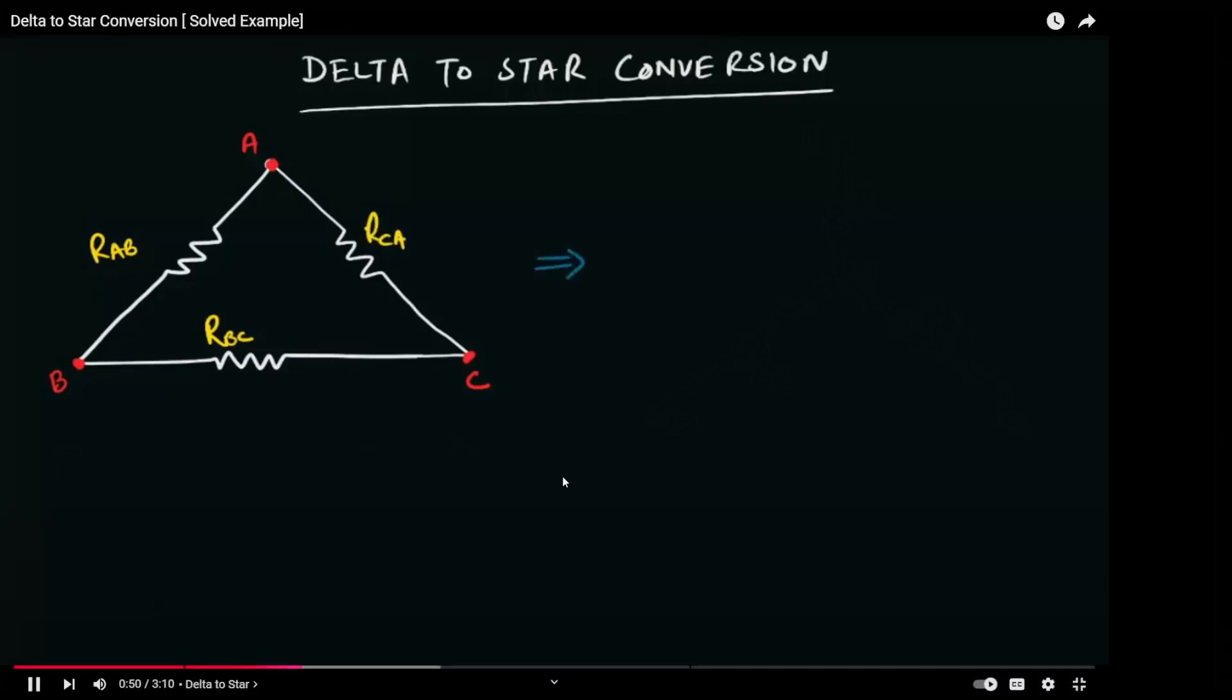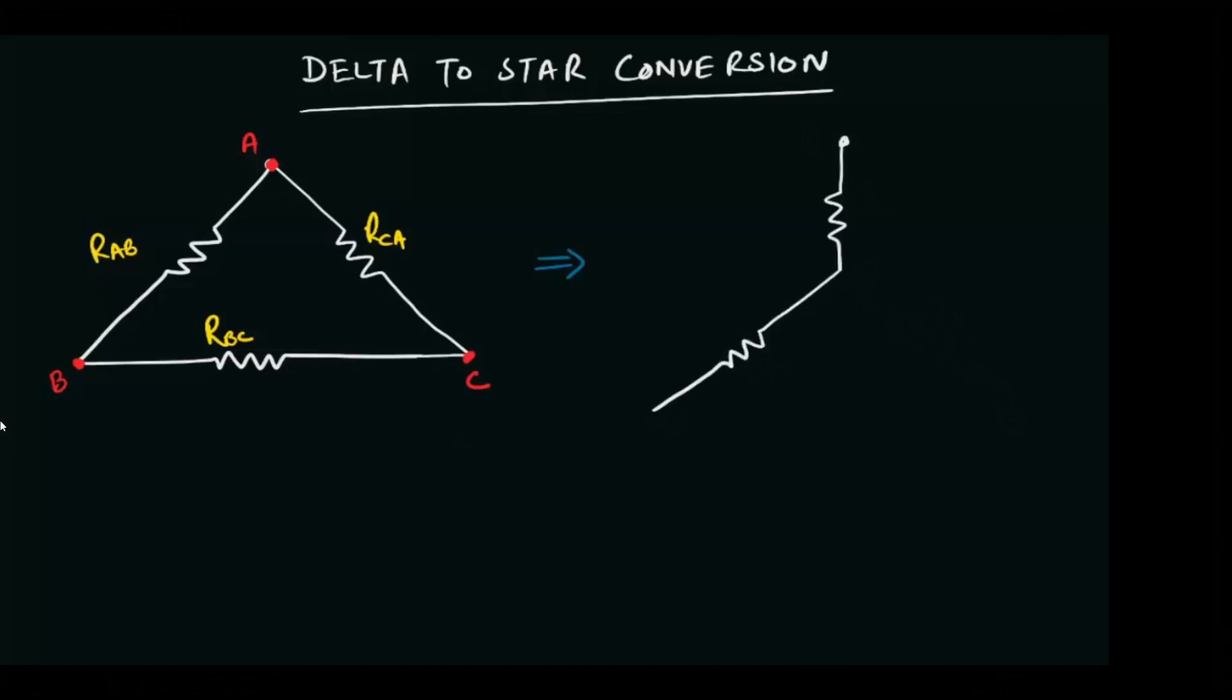Let us first draw a delta network in which the resistances RAB, RBC, and RCA are known and we have to convert this delta network into star network. On my left is the delta network in which A, B, and C are three nodes.